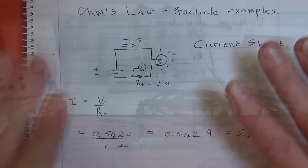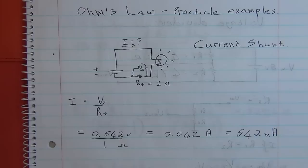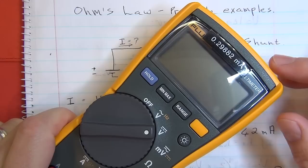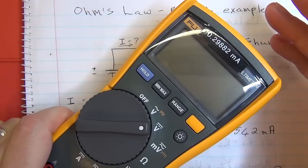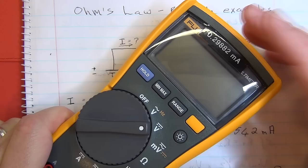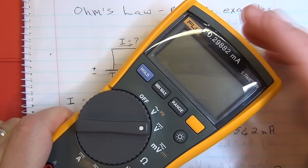Let's look at the theory of what's going on with the current shunt, and also understand practically why we would want to use one. One practical example — where I first came across current shunts — was in a solar power installation at our old house. We had a fairly big battery bank which provided power to the house once it was charged from the solar power, and in order to measure the current being drawn from that battery bank, it needed a current shunt.